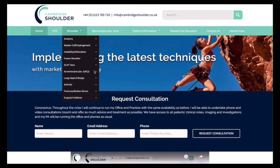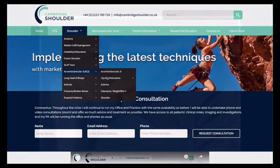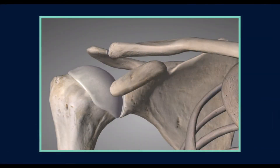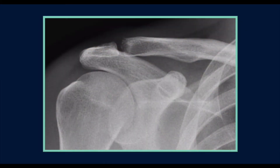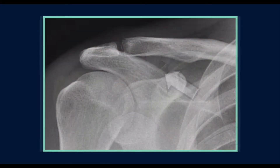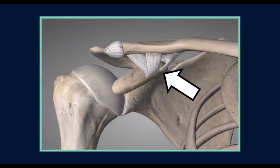Welcome to the acromioclavicular joint section of the Cambridge Shoulder website. The AC joint is formed by the outer end of the clavicle as it joins the acromion, and is stabilised by the coracoclavicular ligaments.